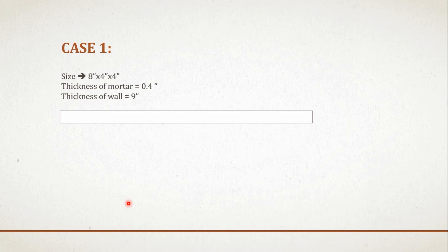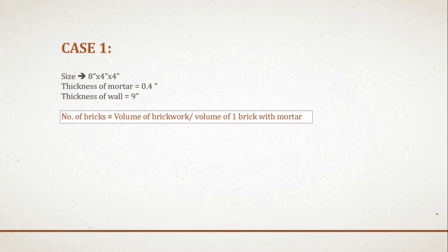Assuming the thickness of mortar as 0.4 inch and the thickness of wall as 9 inch. Since we know that number of bricks equals volume of brickwork divided by volume of one brick with mortar. We know the thickness of mortar and the size of brick. So, volume of one brick with mortar equals 8.4 inch multiplied by 4.4 inch multiplied by 4.4 inch, which gives 162.624 cubic inches.